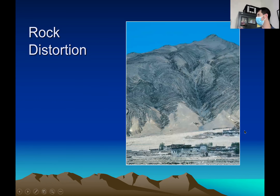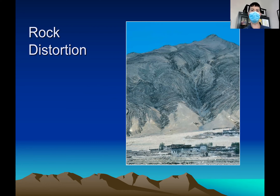Here's an example of just rock distortion. Do you guys see all the ripples and bands in that hill right there? So how does something like that happen? That's what we're looking at.